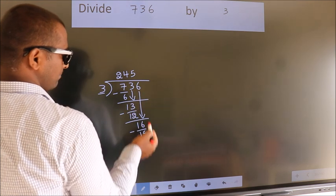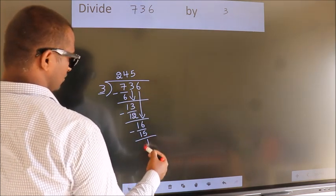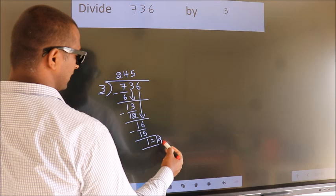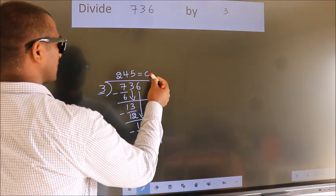No more numbers to bring it down. So we stop here. This is our remainder. This is our quotient.